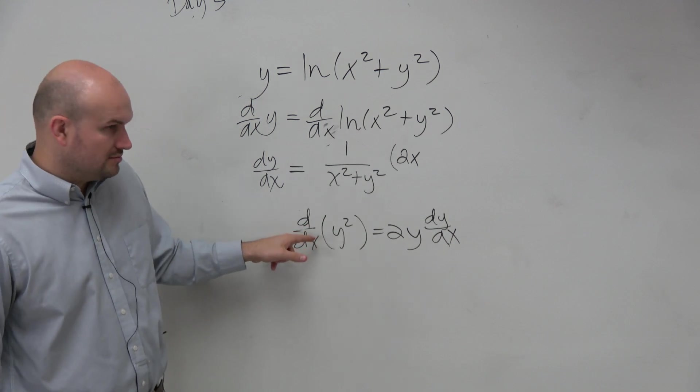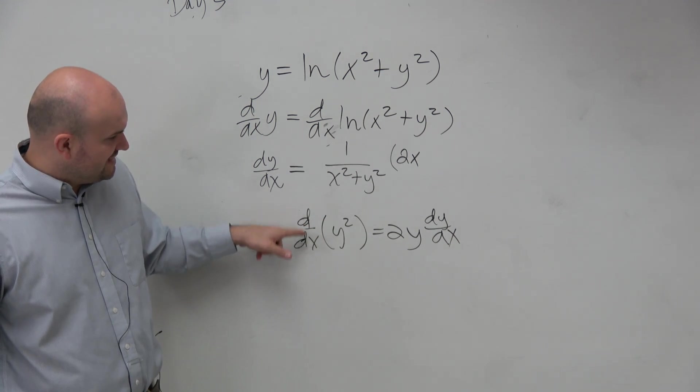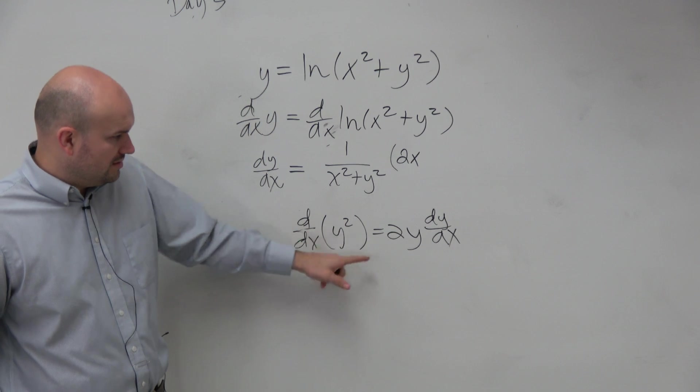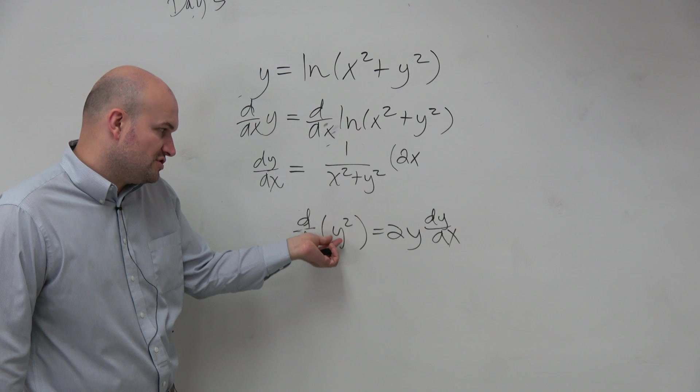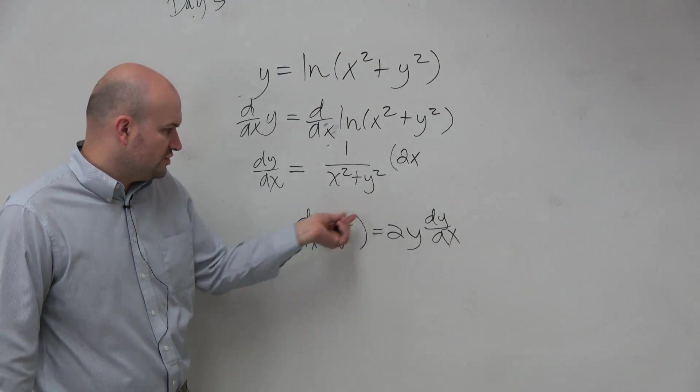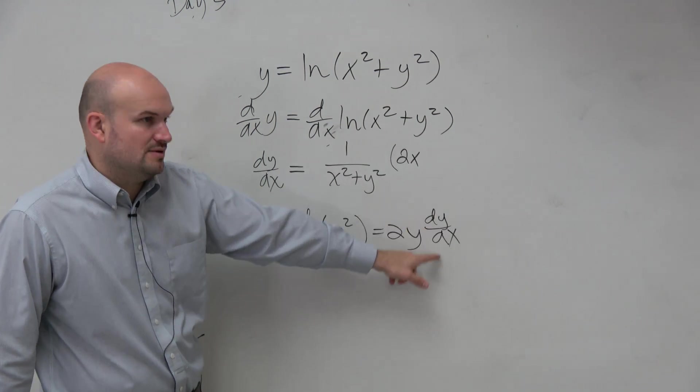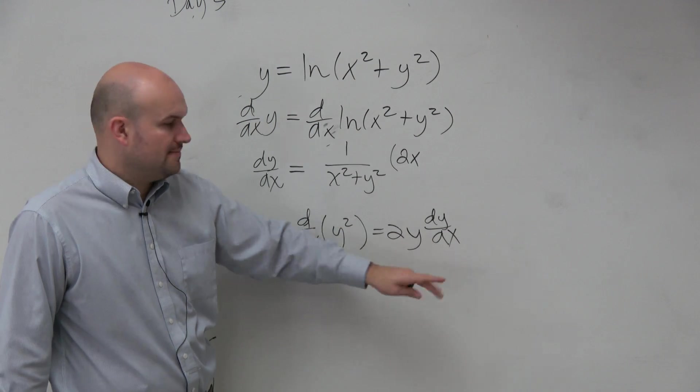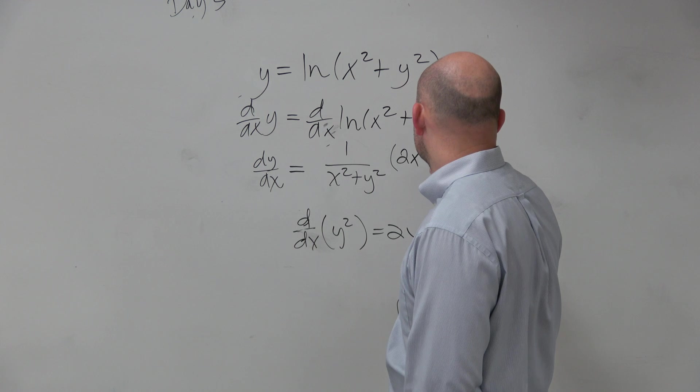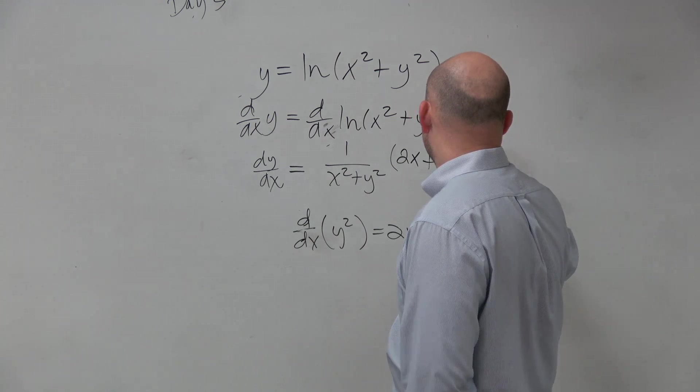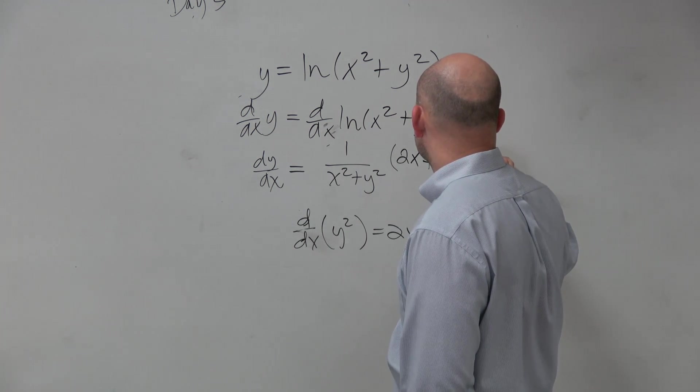Think chain rule. The derivative of d over dx of y squared is 2y, right? Bring down the 2. But then you've got to take the derivative of the inside function, which in this case is y. The derivative of y with respect to x is dy dx. So it's going to be 2x plus 2y dy dx.